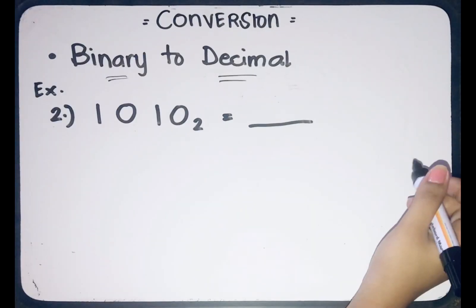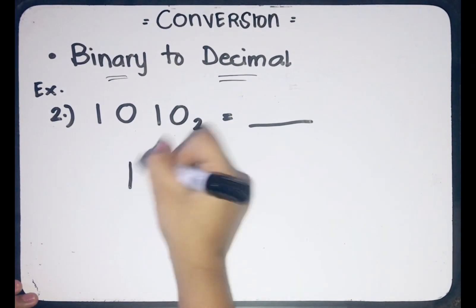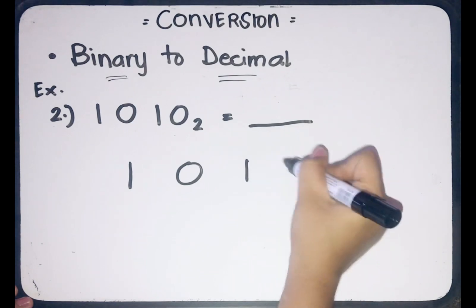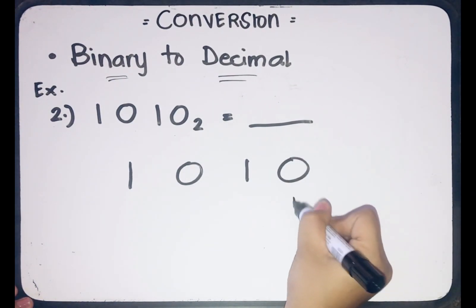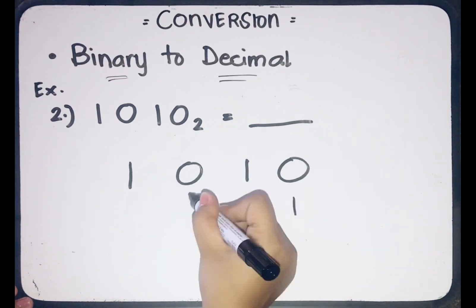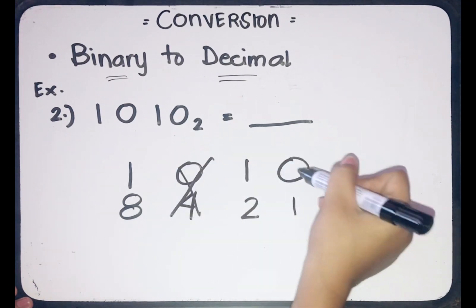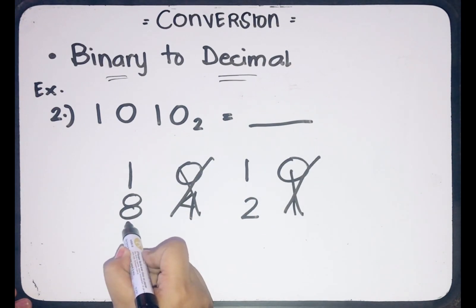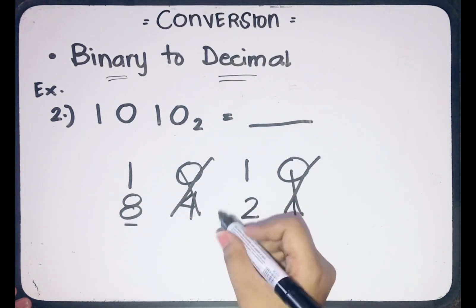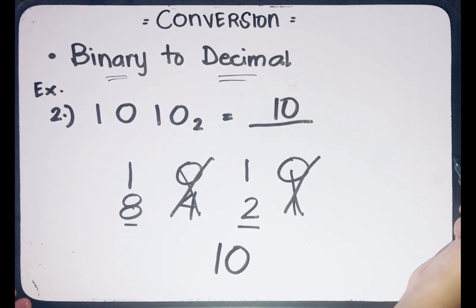Second example: we have binary 1010. Let's rewrite it and identify the place values. Starting with 1, then 2, 4, and 8. Disregard the place values whose binary digit is 0. Then add the remaining place values, which are 8 and 2. 8 plus 2 equals 10. So 10 is the decimal equivalent of binary 1010.